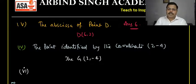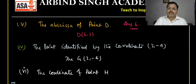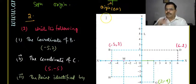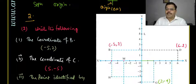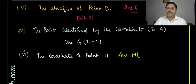The sixth question asks for the coordinate of point H. Looking at the graph, H is located at x = -5 along the x-axis and y = -3 along the y-axis. So the coordinate of H is (-5, -3).